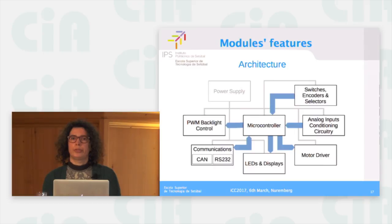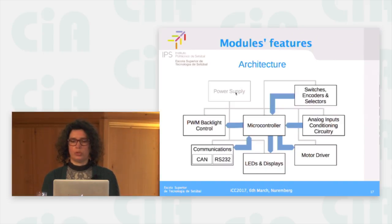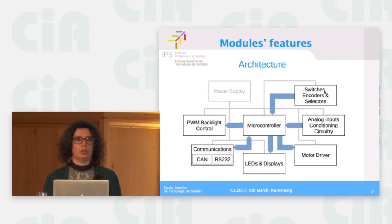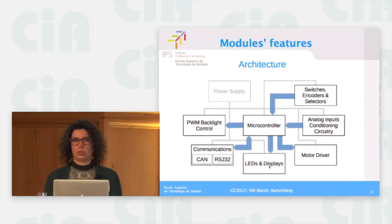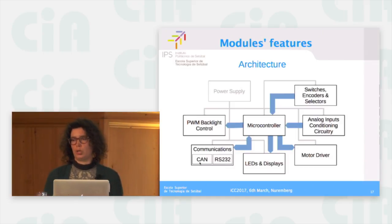The hardware architecture of our modules is microcontroller-based — we use a PIC microcontroller. The power supply uses 12 volts. There are circuits to connect different kinds of inputs: switches, encoders, selectors, and analog inputs with signal conditioning circuits. As outputs, all modules have PWM backlight control, since background light intensity can be controlled by the pilot. We also have drivers for LEDs and displays — almost every module has one. Some modules also include a motor drive. For communications, we use CAN and RS-232 to communicate to the exterior.